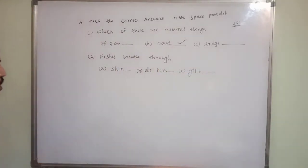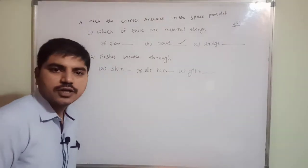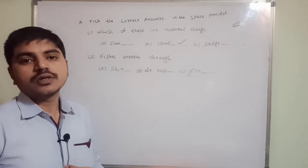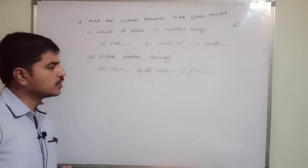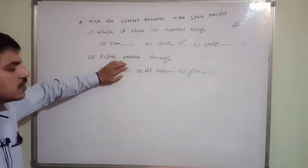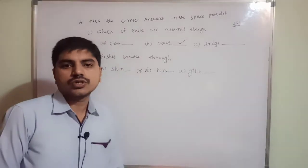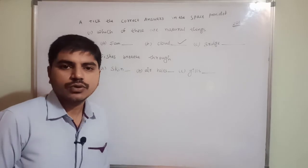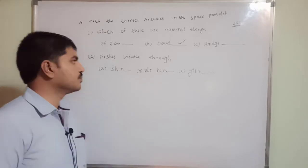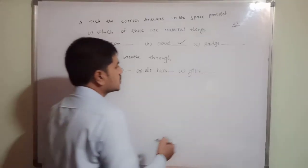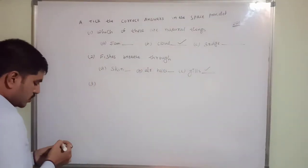The second question: fishes breathe through which? Either skin, air holes, or gills. Skin is used by frogs to breathe. Air holes are used by cockroaches and some special insects. But gills are used by creatures living inside water - fishes. So gills is the correct answer. Mark it and go to the third one.